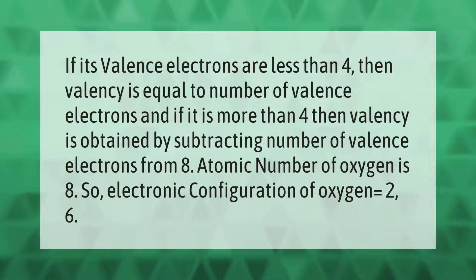If its valence electrons are less than four, then valency is equal to number of valence electrons. And if it is more than four, then valency is obtained by subtracting number of valence electrons from eight. Atomic number of oxygen is eight, so electronic configuration of oxygen equals two, six.